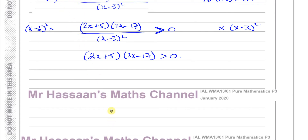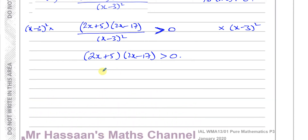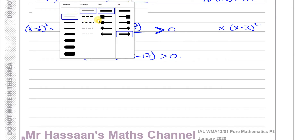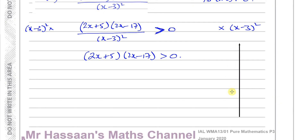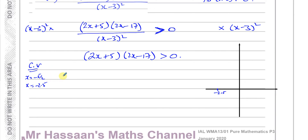It's already factorized — that's why they asked for it in that form. This is a quadratic inequality, so we first find the critical values where it equals 0: x equals minus 5 over 2, which is minus 2.5, and x equals 17 over 2, which is 8.5. This is a smiley-face parabola, so I can sketch it crossing the x-axis at those two points.